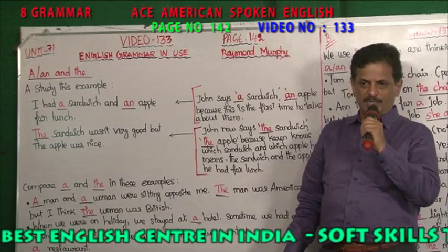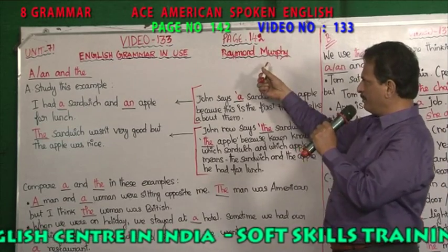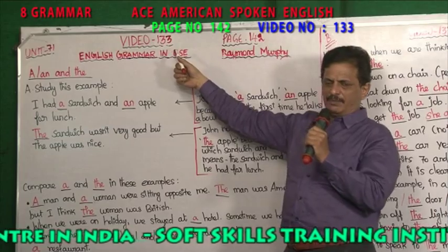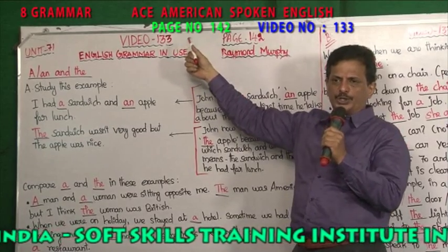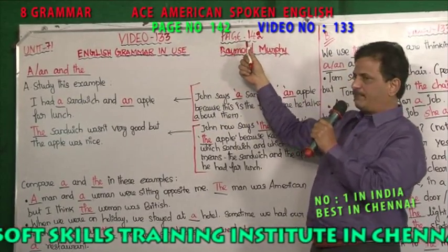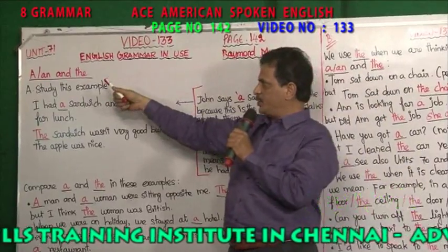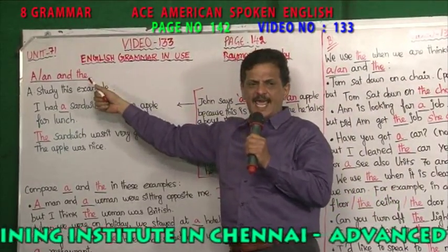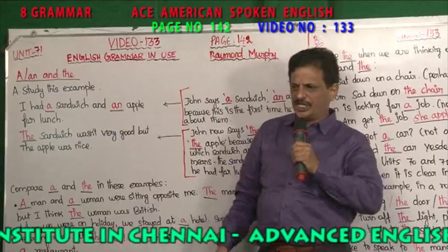Friends, welcome to American English Center. Raymond Murphy's English Grammar. We have come to video number 133, page number 142, unit 71. The topic is A, AN. These are called articles.